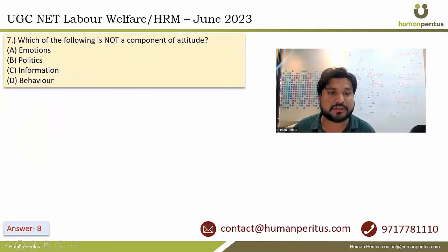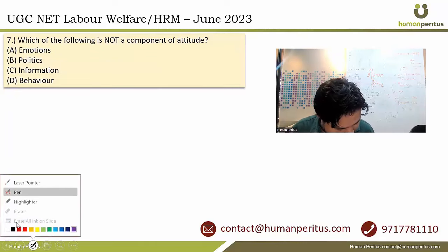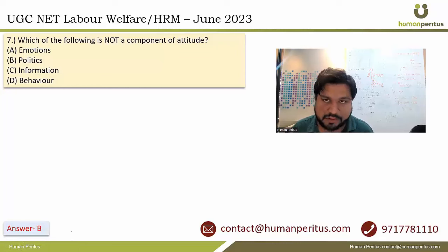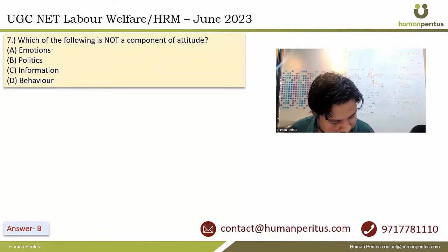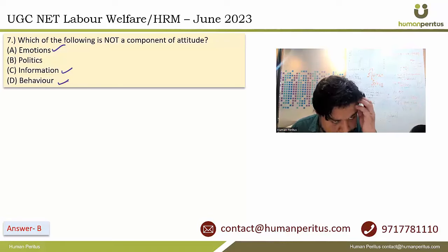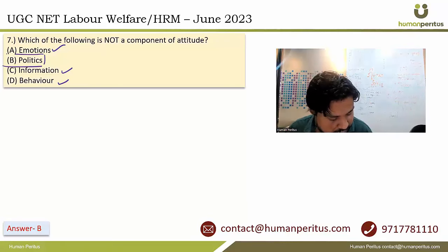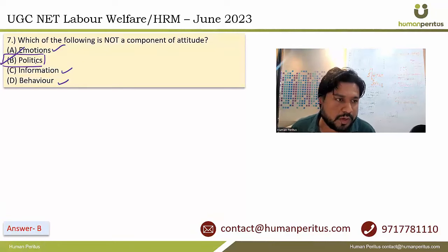Which of the following is not a component of attitude? Attitude has three components: affective, cognition, and behavior — which correspond to emotions, information, and behavior. Emotions can be placed under the affective component. Politics has nothing to do with attitude components, making it the odd one out. Therefore, that is the correct answer.